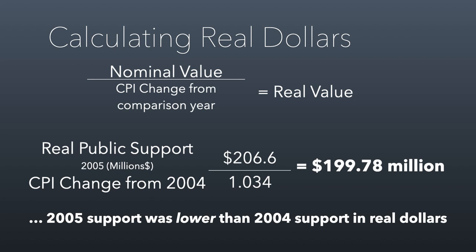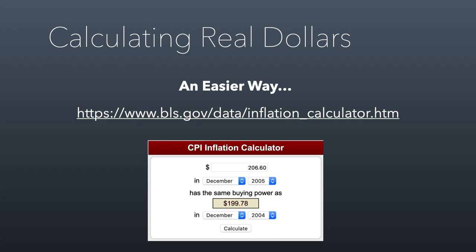I didn't give you a super detailed explanation of how to do this calculation using CPI numbers because there's an easier way. If you go to bls.gov, you can find their inflation calculator. Here you can enter in the amount of any current dollar value and compare it to an index year. I compared December 2005 dollars to December 2004 dollars, and that gave me the same calculation as if I had done it by hand with the CPI numbers. When you calculate real dollars, this is a much easier way to do it because this little widget does all the math behind the scenes. It's actually a fun tool — you could compare your salary to a salary you had in 2000 or 2003; you can go years into the past with this.